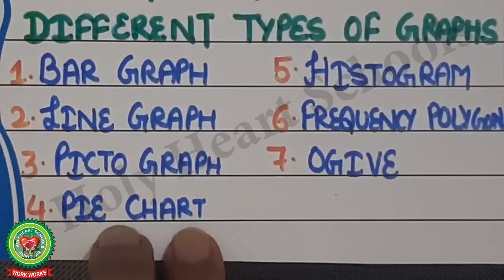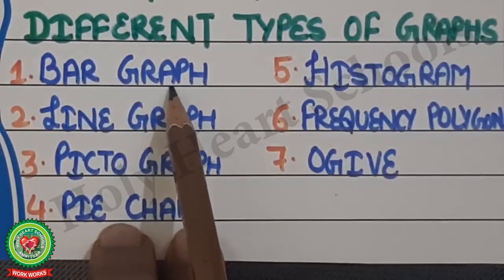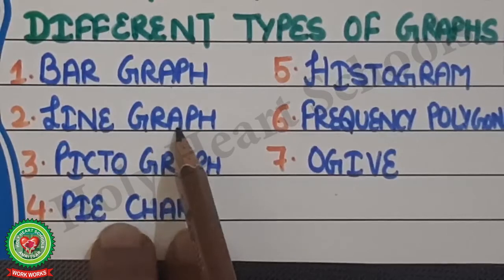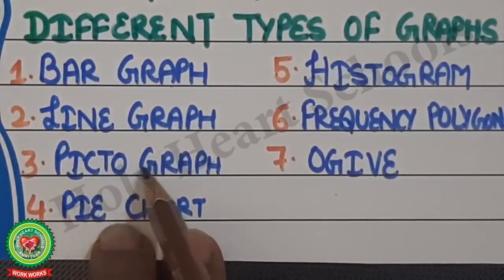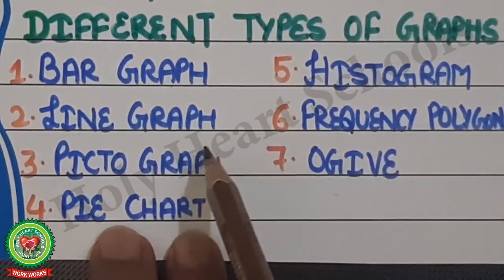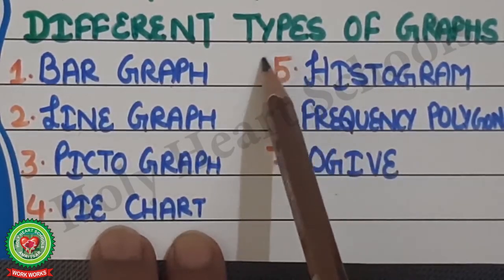In our junior classes we have done different types of graphs. The first type is bar graph, also known as column graph. The second type is line graph. The third is pictograph, in which we draw pictures. The fourth is pie chart, which is a circular shape of graph. The fifth, which we will do today, is histogram.